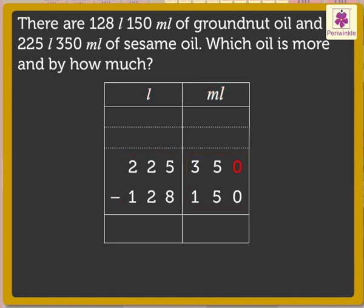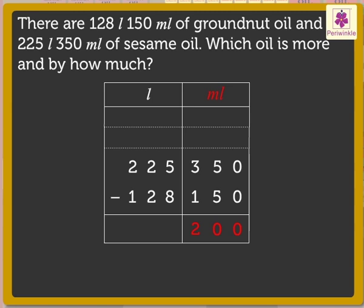0 minus 0 is equal to 0. 5 minus 5 is equal to 0. 3 minus 1 is equal to 2. So, we get 200 millilitres.